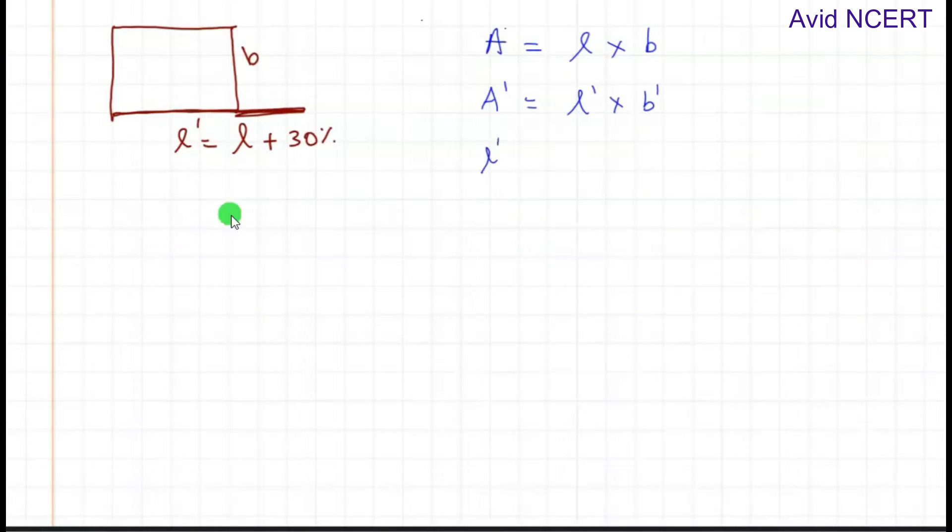L dash equals l plus 30% of l. L plus 30% is 30/100 times l. The zeros get cancelled, so 3/10 equals 0.3l. This equals l plus 0.3l, which is 1l plus 0.3l, which equals 1.3l. So this is the new length, l dash.